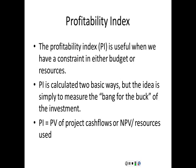It's useful when we have a budget constraint or a resource constraint. This could be things such as manpower, machine hours, or money. We need to calculate a ratio — it's basically the benefit of the project divided by the cost. A typical way to calculate the PI ratio is we take the present value of the project cash flows and divide by the cost of the project or the resources used.